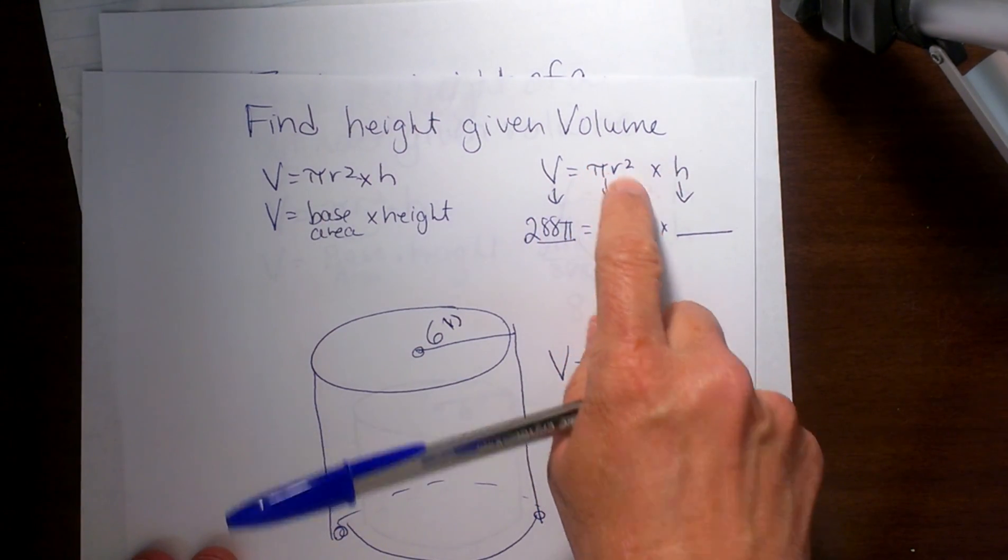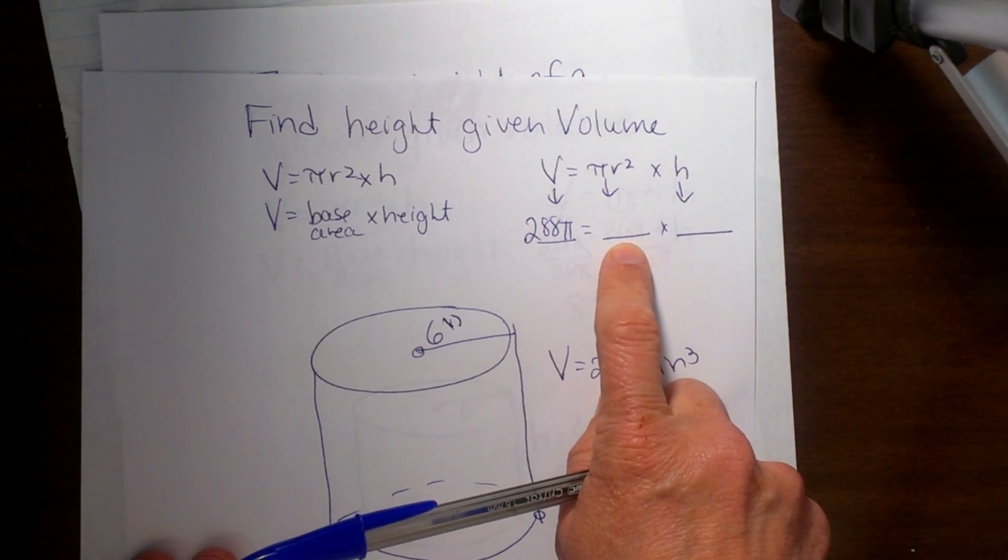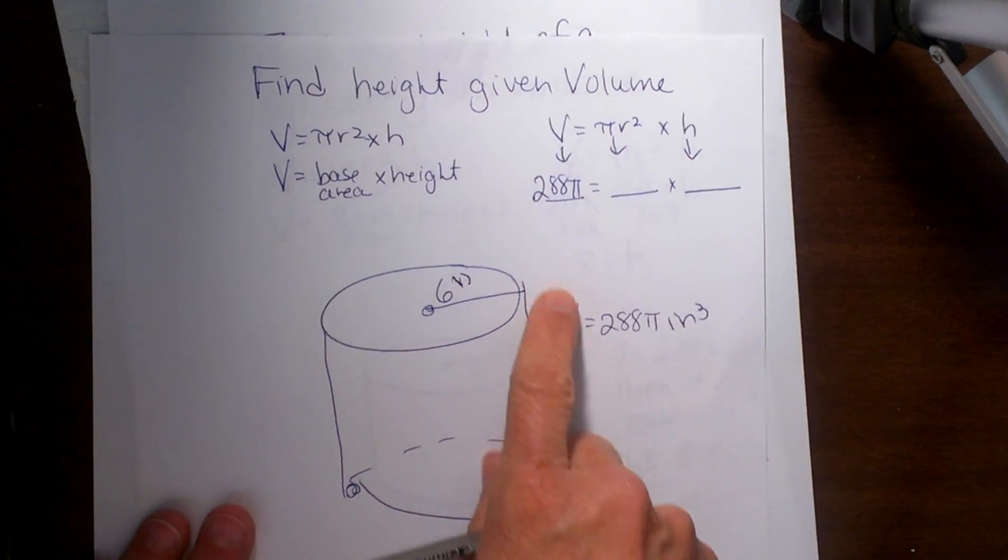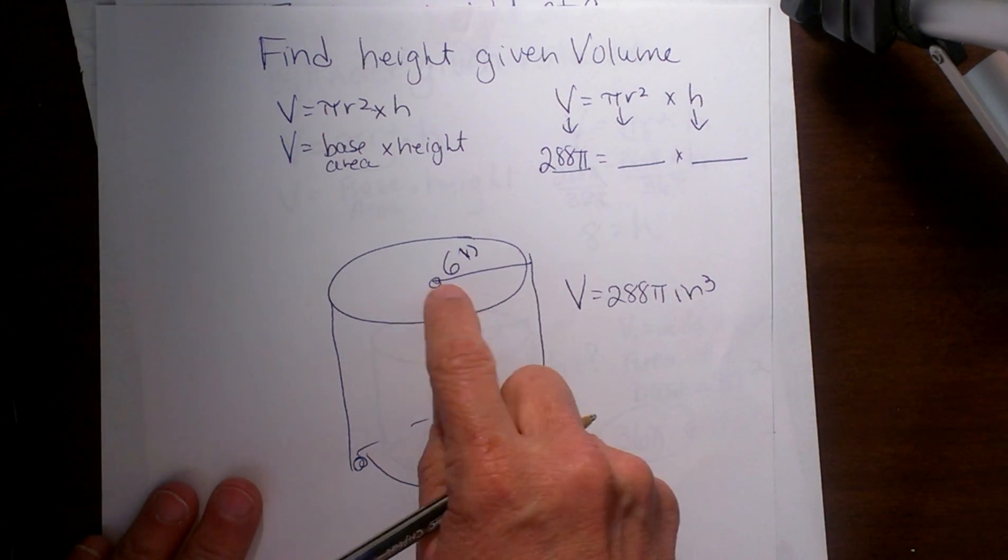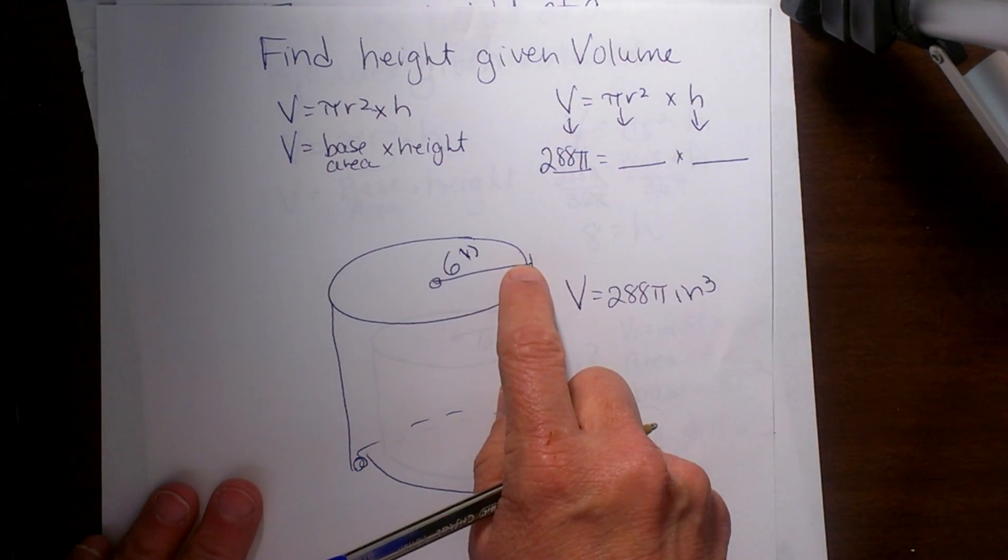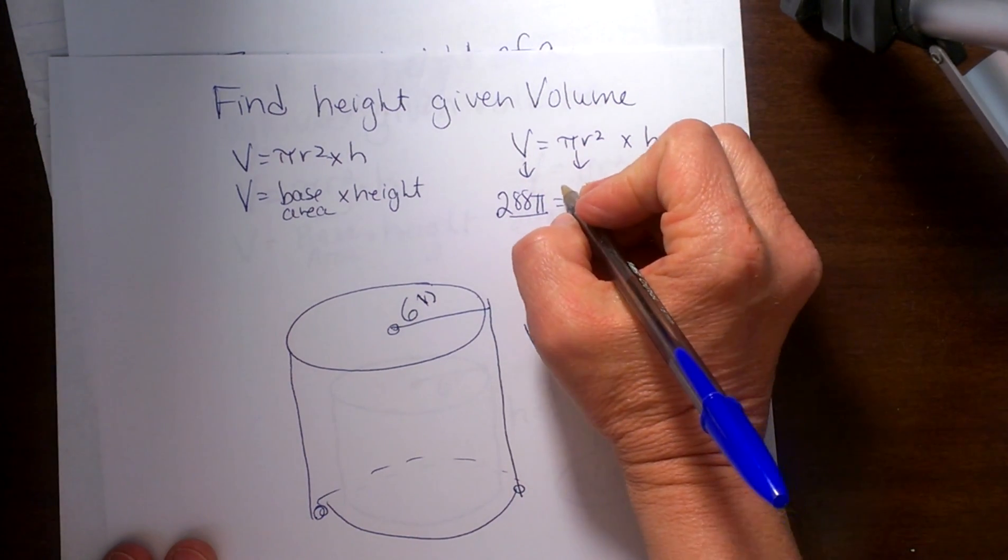Now I need to plug in my area of the base. Well that is pi r squared. So let's look at our cylinder. Our cylinder has a radius of 6. So all I have to do is plug a 6 in for my radius.